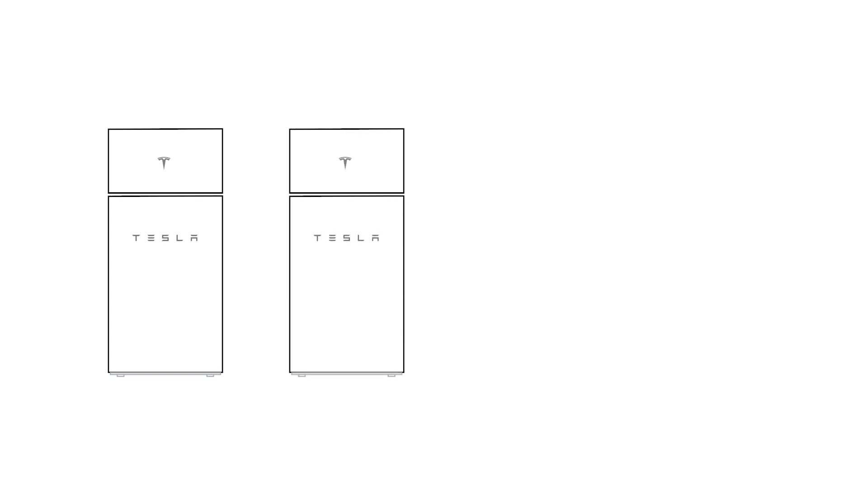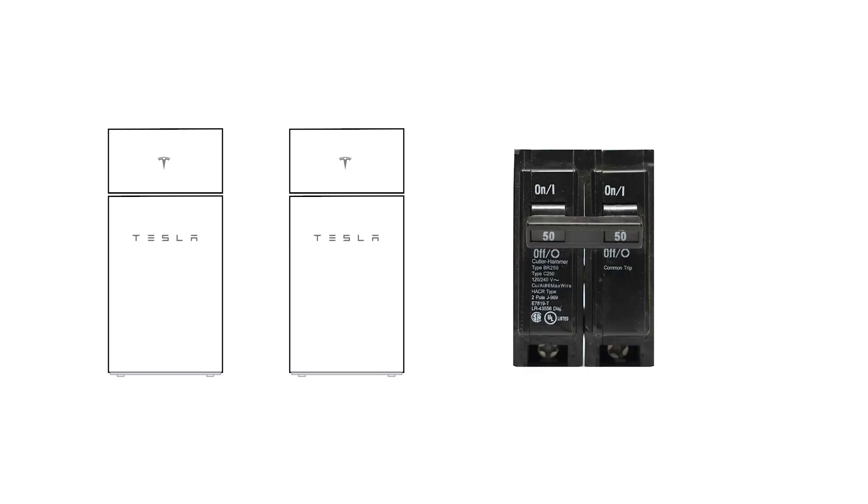Powerwall Plus can be installed with one additional Expansion Powerwall Plus. An additional Powerwall Plus requires its own AC circuit with a new 2-pole 50-amp breaker.